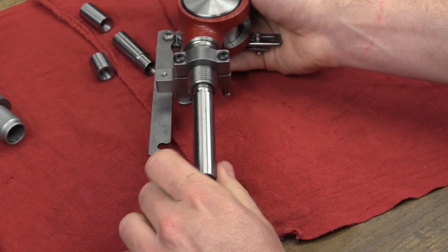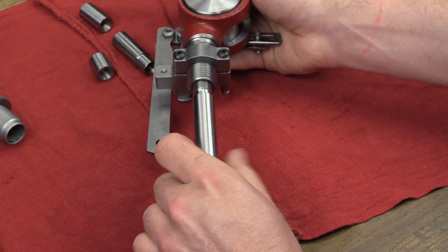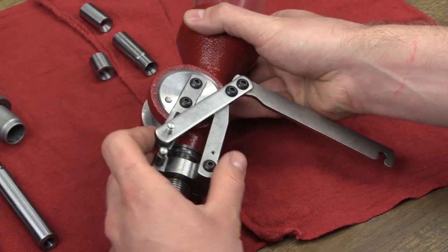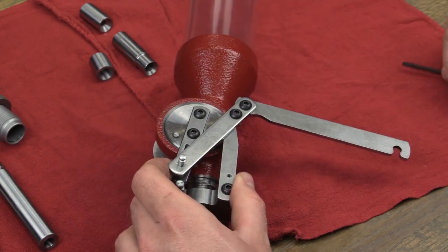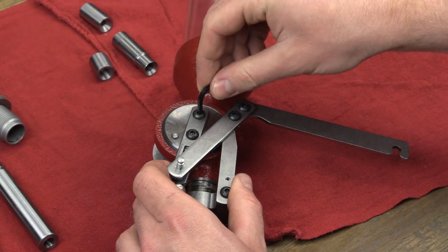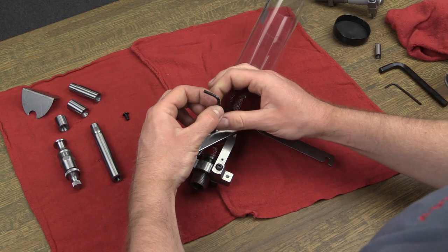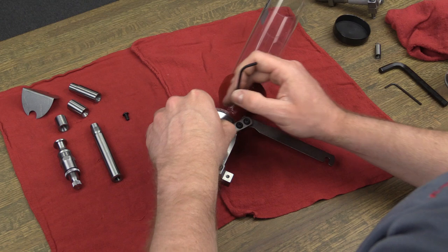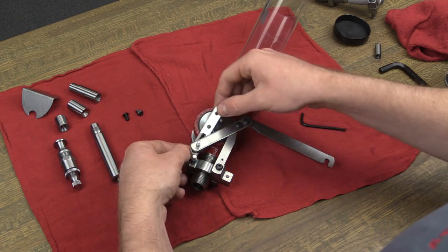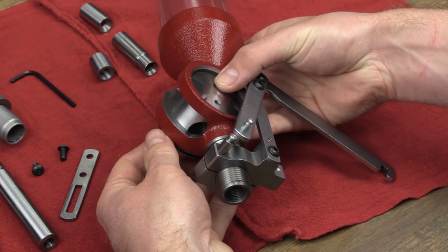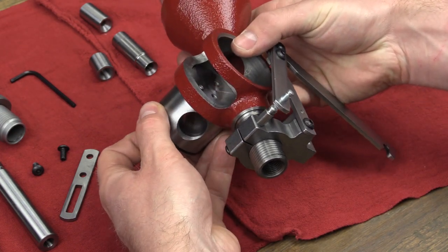Unscrew the drop tube from the bottom of the powder measure. Remove the handle or rotating arm from the powder measure by removing the two attaching screws with an eighth inch hex wrench. Slide the rotor out of the body by pressing gently on the handle side of the rotor.